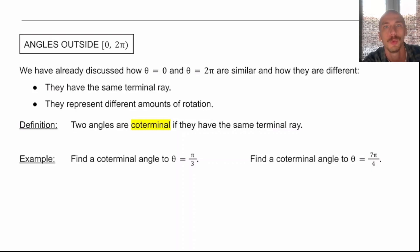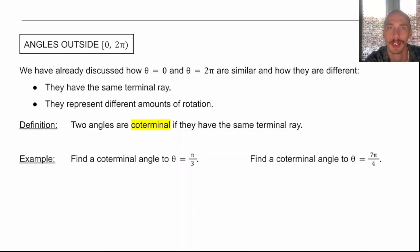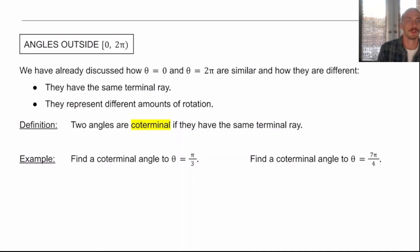In this video, we're going to be working some trig problems with radian inputs outside the interval 0 to 2π. So we're going to go with negative radian inputs and radian inputs that are bigger than 2π.